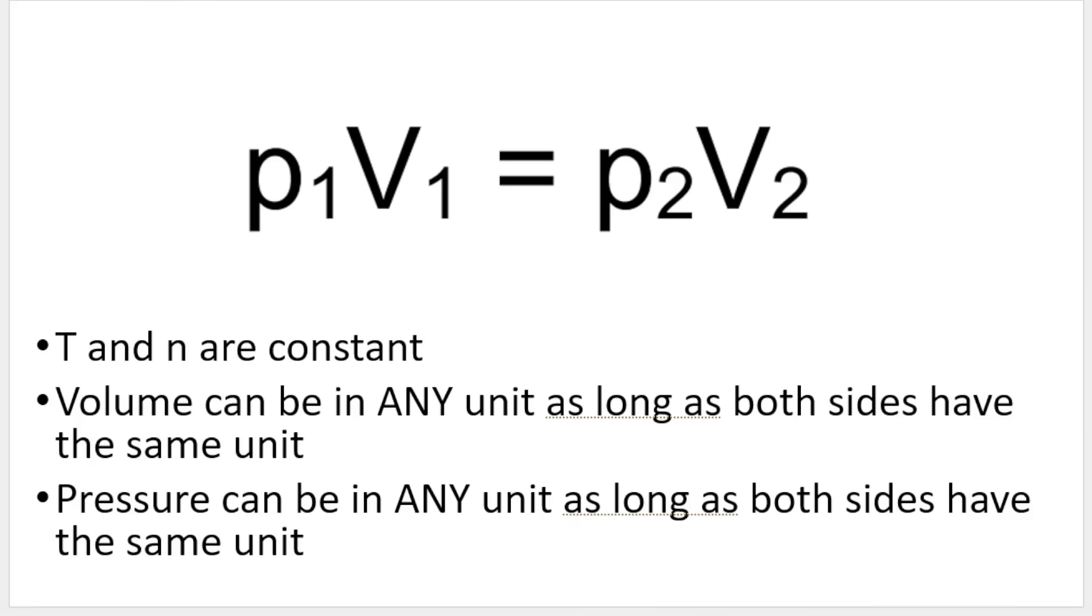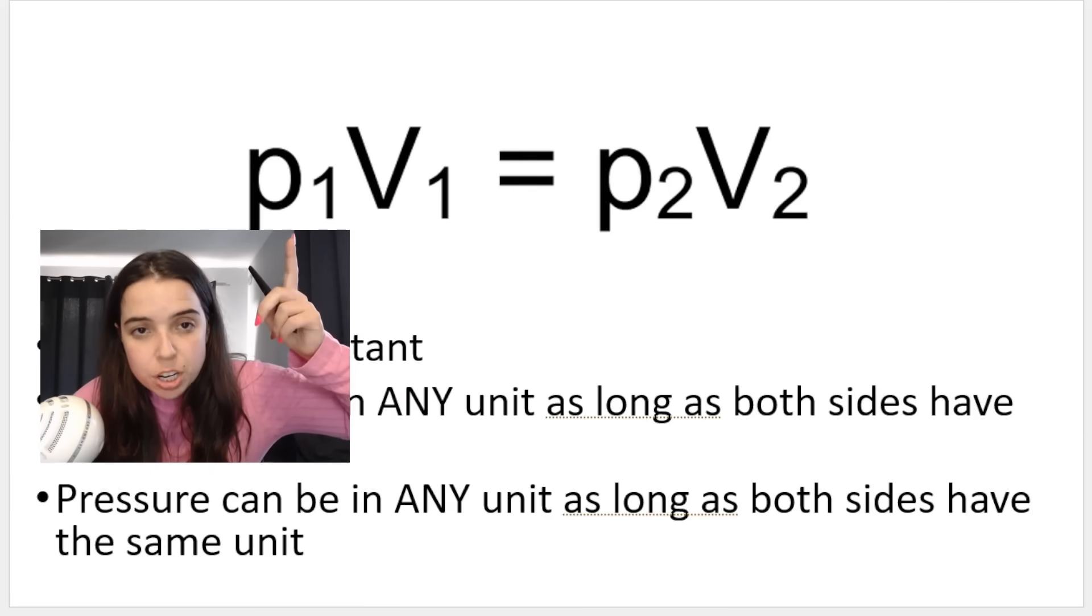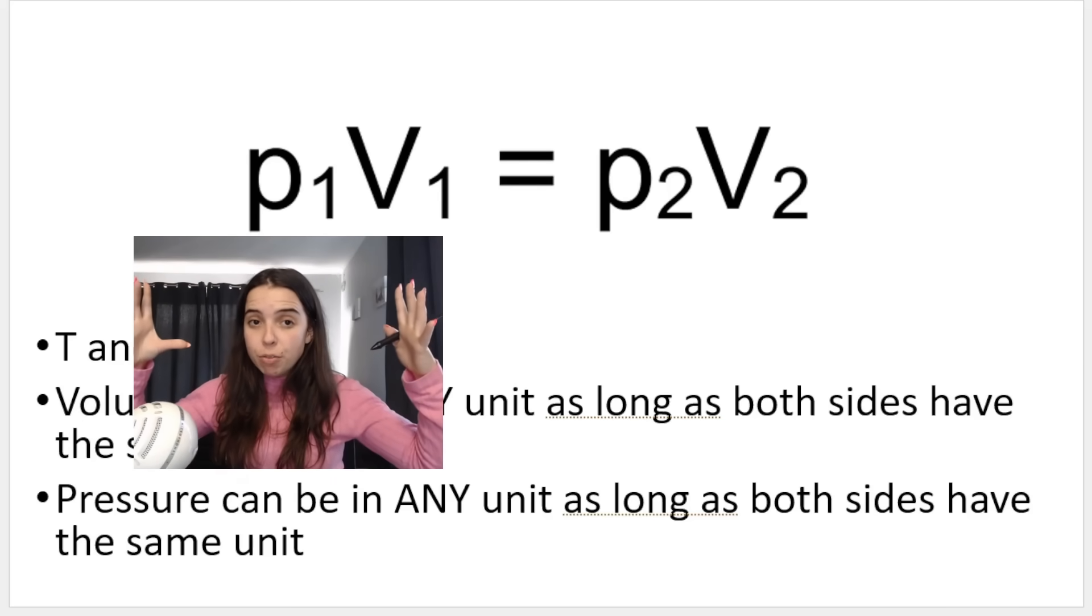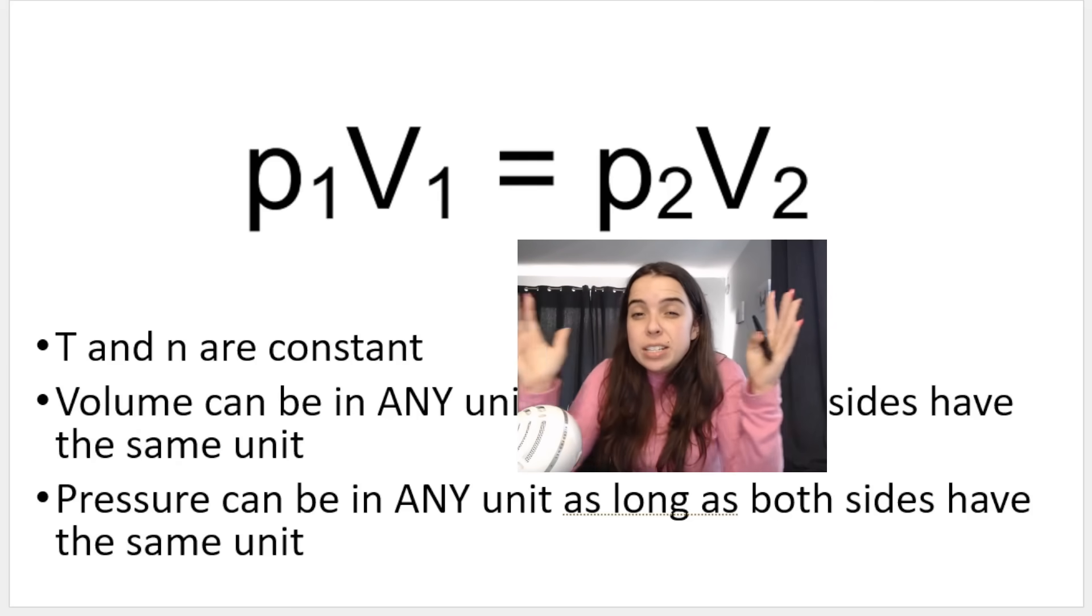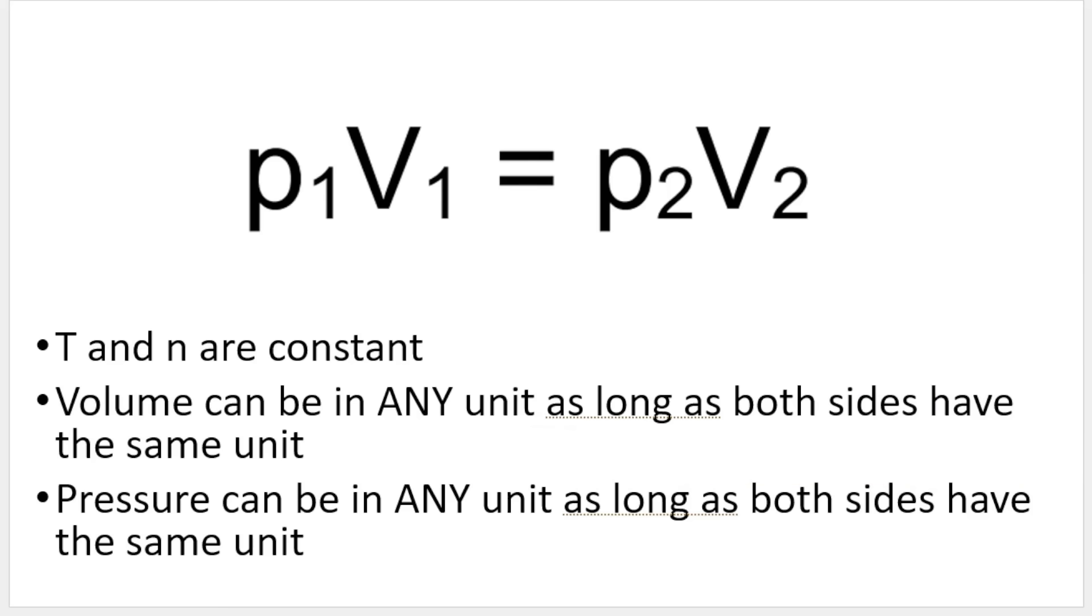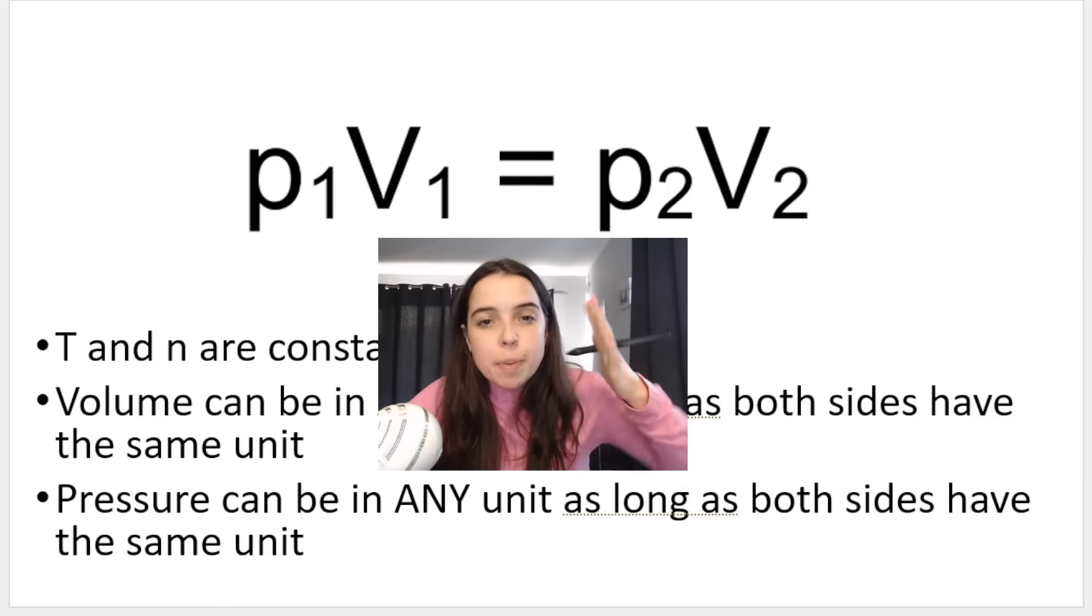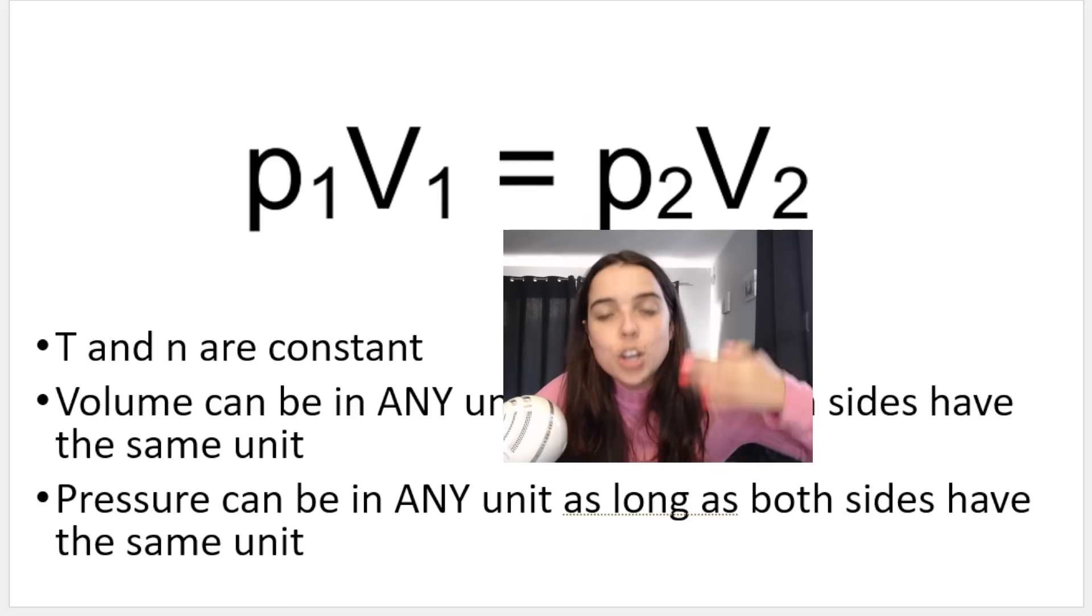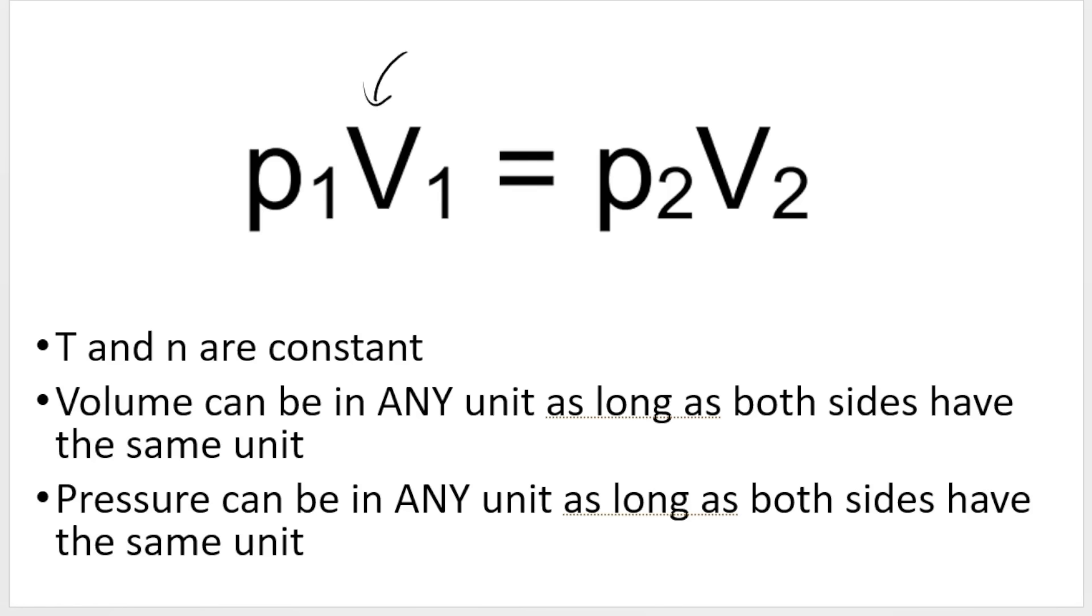This is the formula you will use for Boyle's law: P1 times V1 equals P2 times V2. Pressure one and volume one for situation number one. Then if we decrease the volume, pressure will get bigger, so that's scenario two, P2 and V2. Remember T and N are constant. Volume can be in any unit as long as both sides have the same unit. Same thing with pressure, can be in any unit as long as both sides have the same unit.